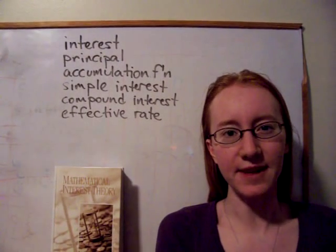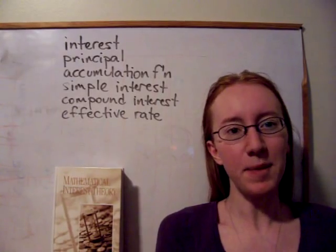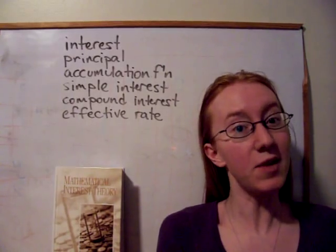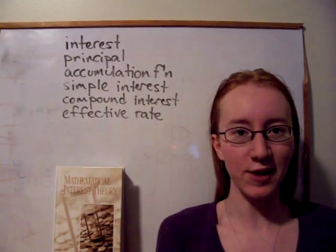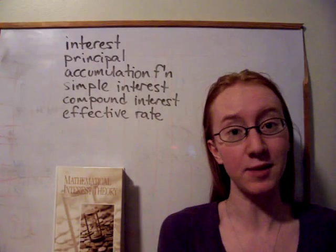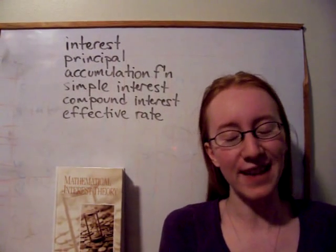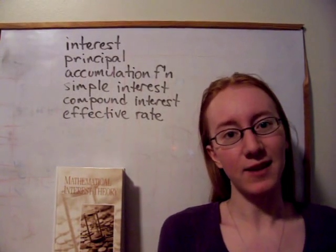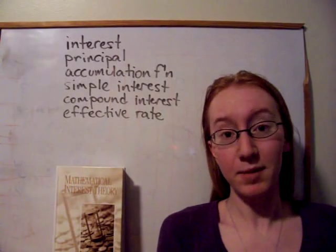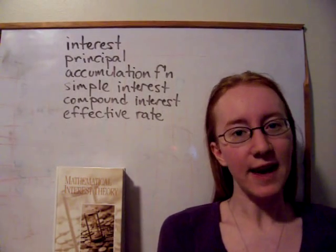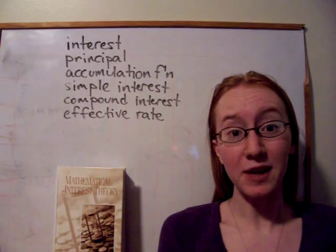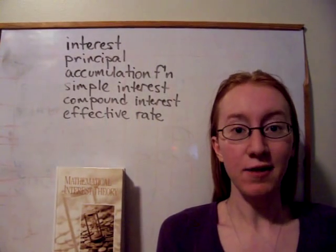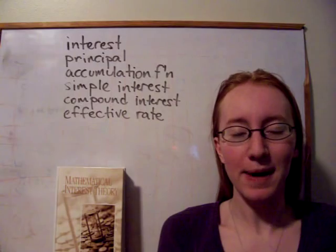We looked at two specific kinds of interest: simple and compound. Simple pays a fixed percentage of the original capital every period, so you don't actually earn interest on the interest you've earned — you just earn interest on the original principal. Obviously over a long period of time that's not very good, and simple interest is rarely used in practice. The more common case is compound interest, where you earn a fixed percentage of the entire balance in the account up to the beginning of each period, so you earn interest on the interest every year.